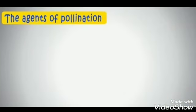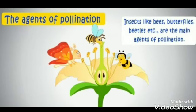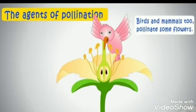Now we will learn about the different agents of pollination. Insects like bees, butterflies, beetles, etc. are the main agents of pollination. Birds and mammals too pollinate some flowers. Small birds like hummingbirds visit flowers for sucking nectar. Some birds visit flowers to catch insects from flowers, and they too cause transfer of pollen or pollination.